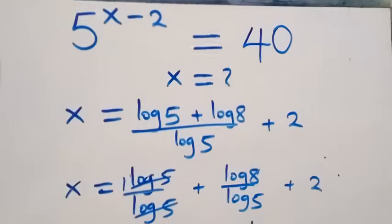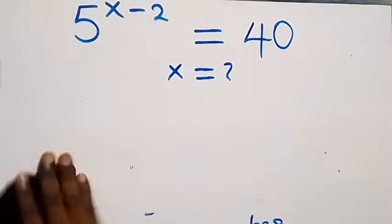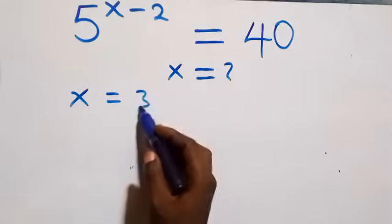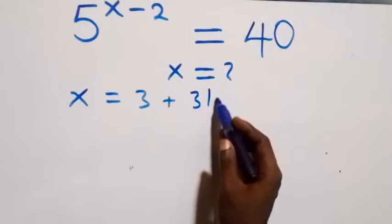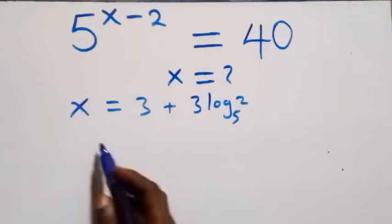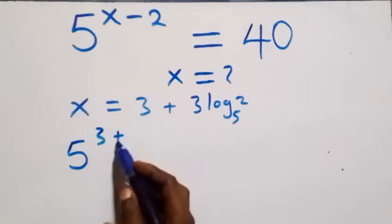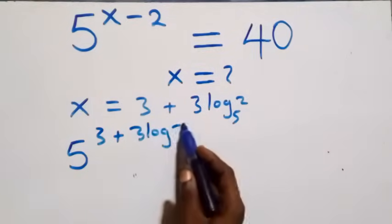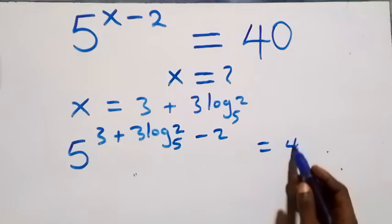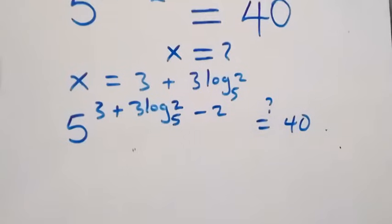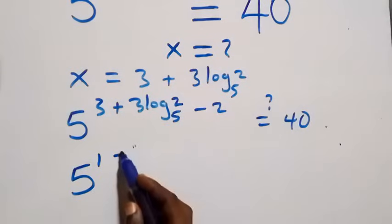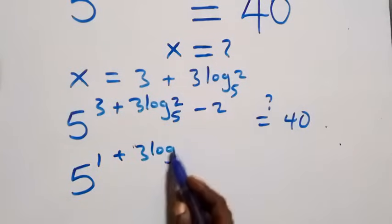Now let's check if this satisfies the original equation. We substitute x equals 3 plus 3 log₅ 2 into 5 raised to power x minus 2, giving 5 raised to power (3 plus 3 log₅ 2) minus 2. Bringing 3 minus 2 together gives 1, so we have 5 raised to power 1 plus 3 log₅ 2.